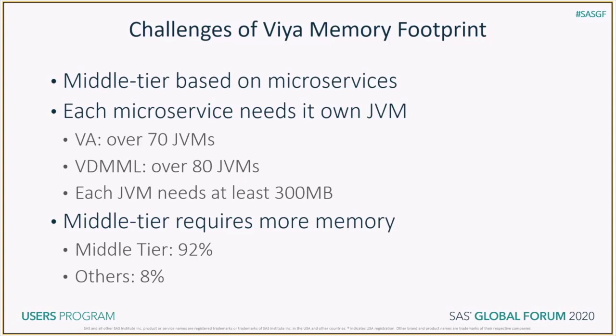Viya still uses a multi-tier architecture. However, its middle tier is completely written using microservices. As you may know, each microservice runs in its own web application server, which in turn runs in its own JVM. With this architecture, SAS Viya Visual Analytics, or VA, ended up with over 70 microservices and hence required 70 JVMs. SAS Visual Data Mining and Machine Learning, or VDMML, ended up with over 80 microservices and hence requires over 80 JVMs. Each JVM requires at least 300 MB, hence creating a big footprint challenge for SAS Viya users.